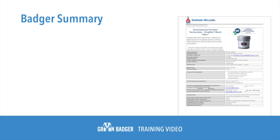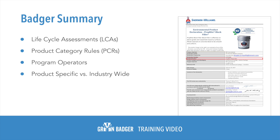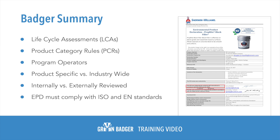So to recap: EPDs are independently verified reports based on life cycle assessment studies. The LCAs must have been conducted according to a set of product category rules and then peer reviewed. The EPDs are managed and created by program operators — the organizations that ensure the EPDs meet the requirements — and you can always find that information on the first or second page. You'll need to note whether it is product-specific, meaning it's showing the specific product and brand, or whether it's industry-wide. You'll need to verify whether it was internally or externally reviewed. And finally, you'll want to double-check compliance with all of the ISO and EN standards.